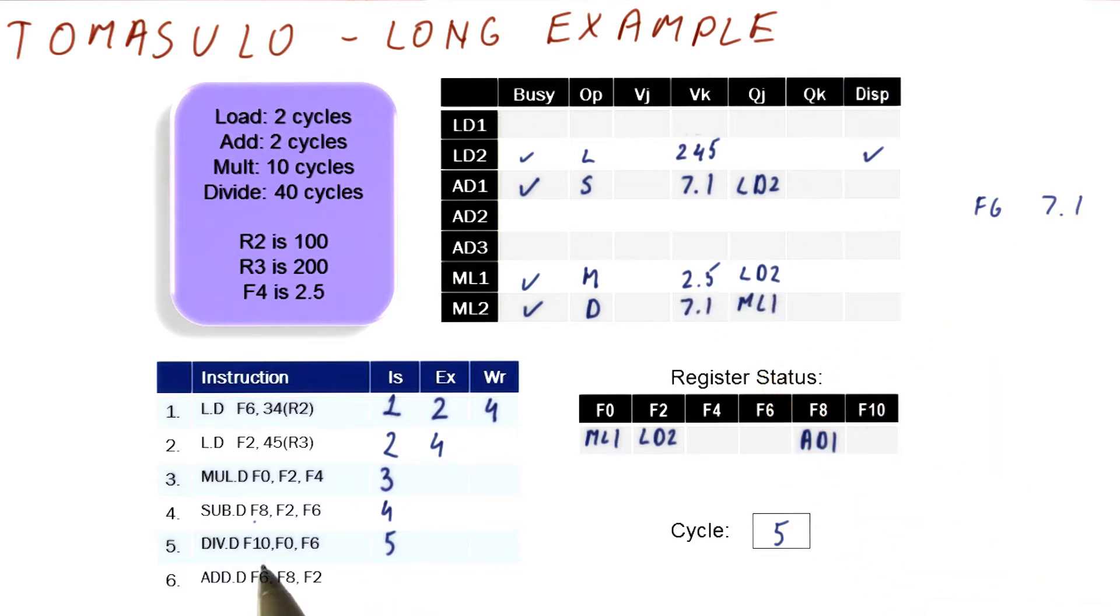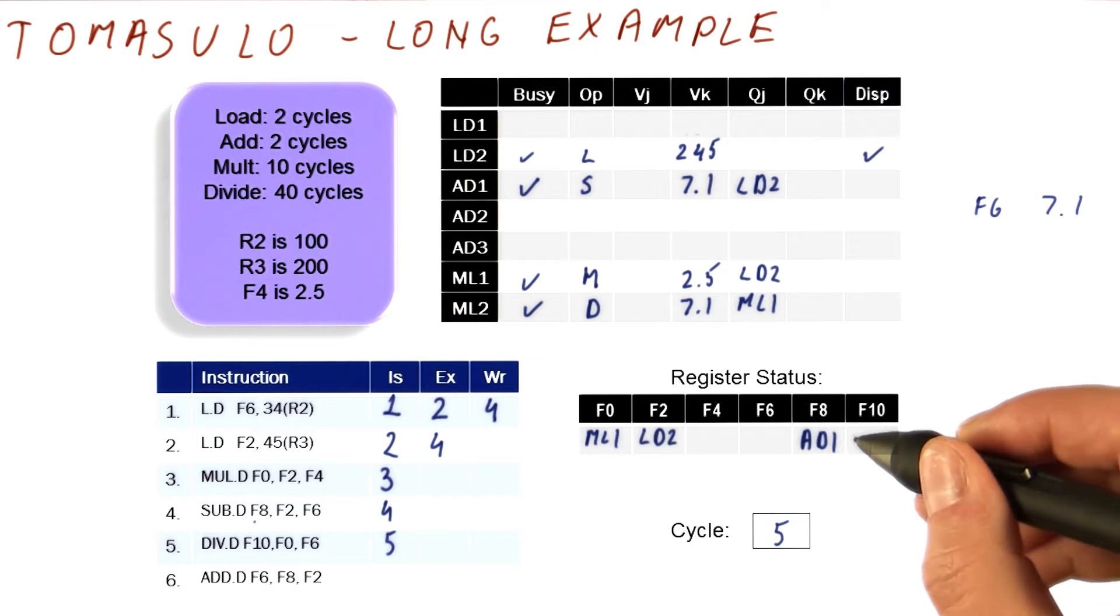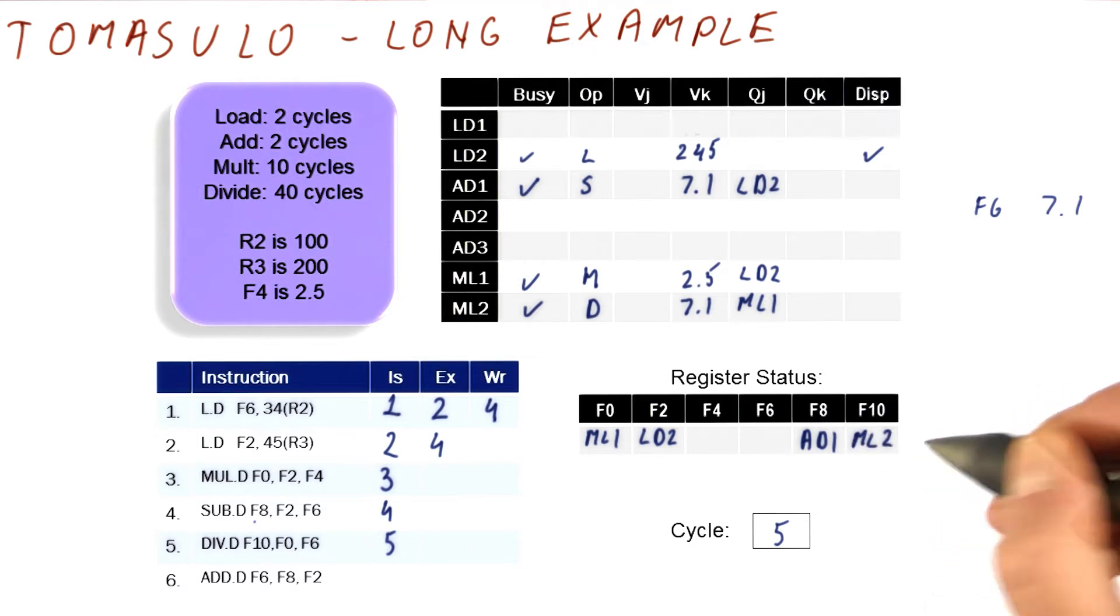And then we're going to rename F10 to point to this ML2, which is where we put the divide. And that concludes the issue for this cycle.